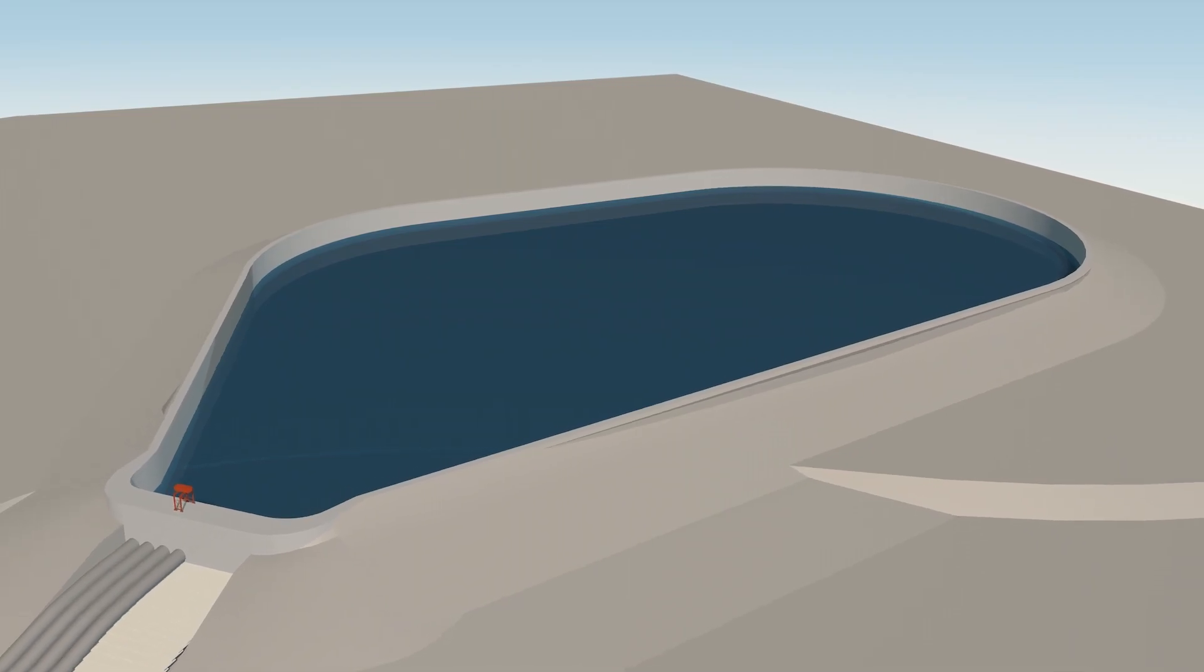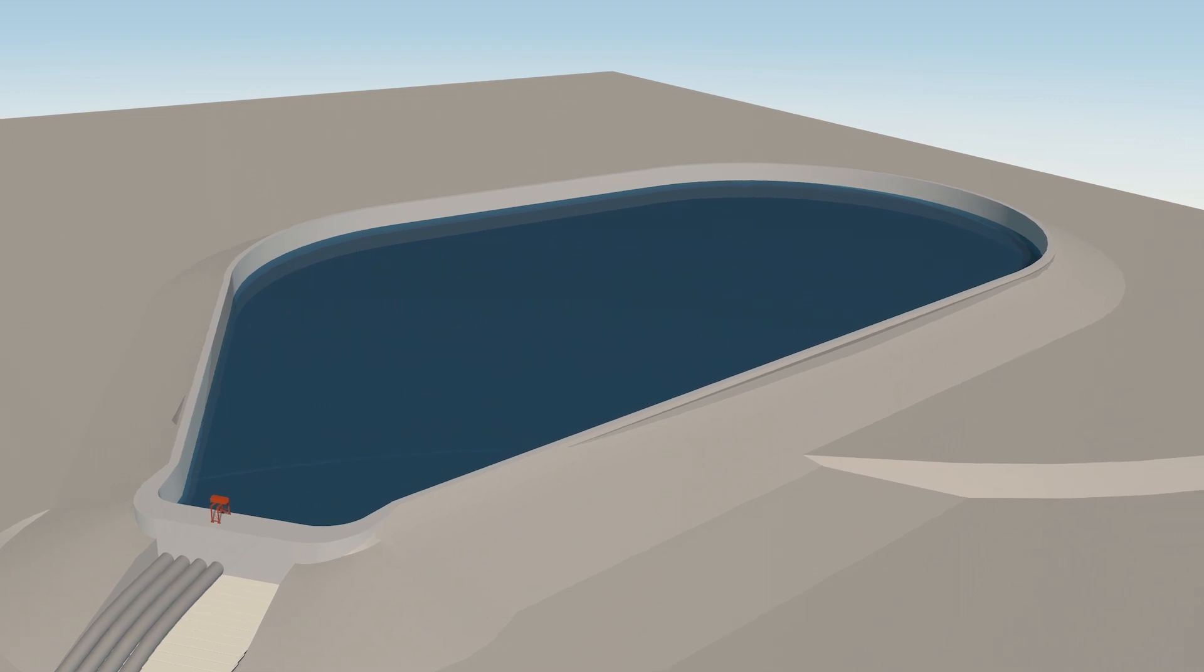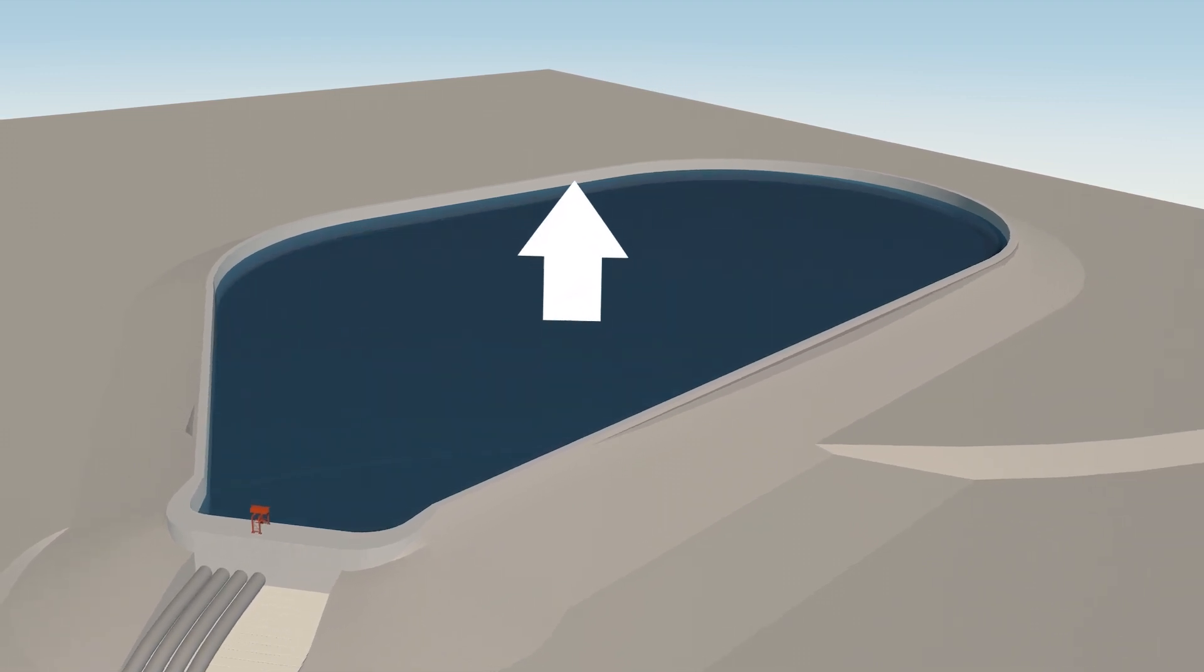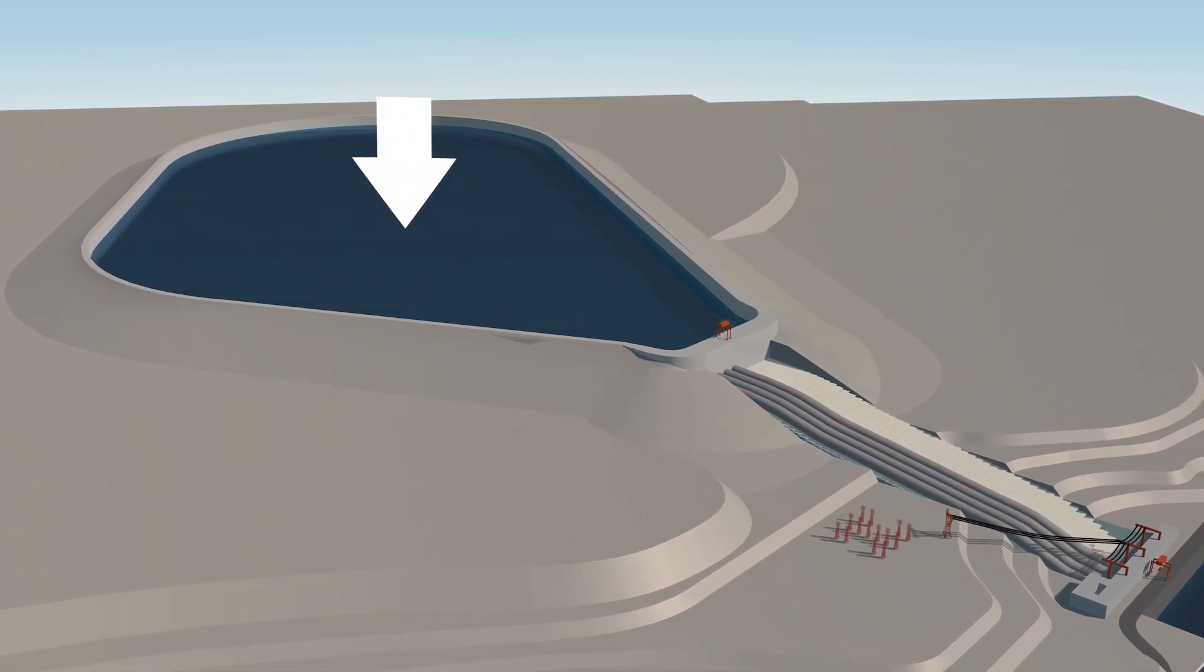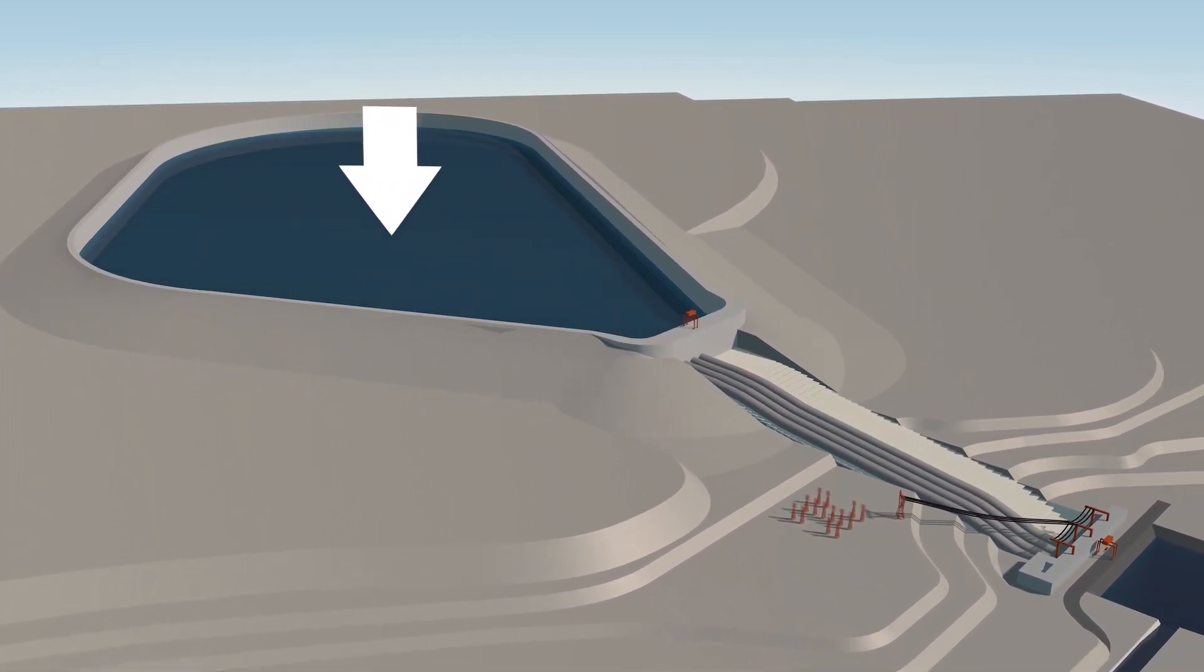The pumped storage plant is most efficient when it operates in pump mode to fill the upper reservoir with water when electricity prices are low, and in turbine mode to supply power to the grid during periods of peak demand when electricity prices are highest.